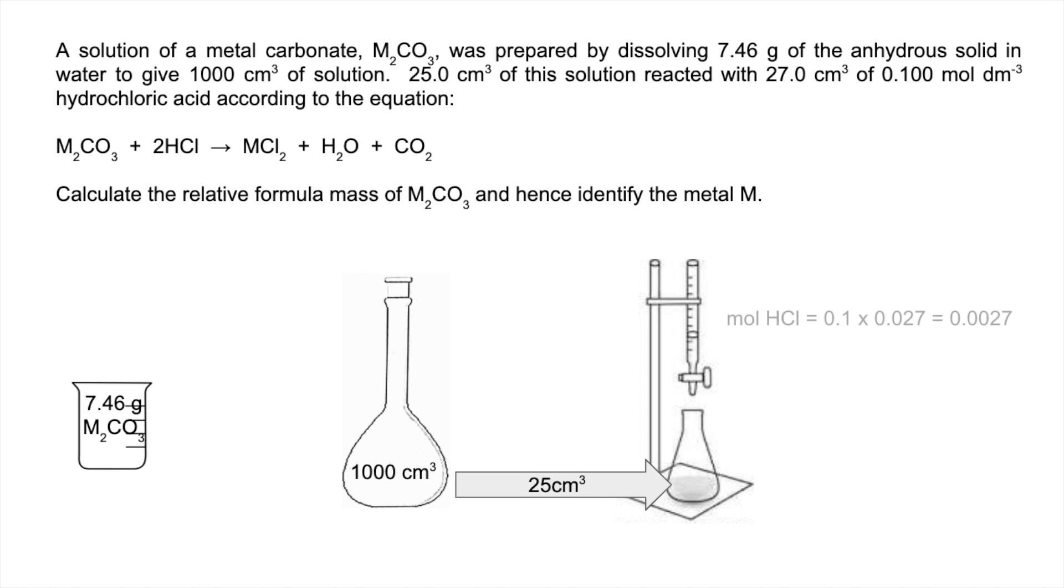The first thing we can do is work out the moles of HCl in that 27 cm³. That's concentration times volume, so it'll be 0.0027. Remember the volume's got to be in decimeters cubed. The mole ratio in the chemical equation is telling us that the moles of M₂CO₃ in the 25 cm³ used for the titration will be half of that, so that's 0.00135.